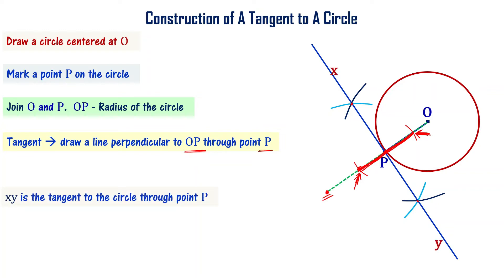The tangent is named XY. XY is the tangent to the circle through point P. By the theorem, the tangent is perpendicular to the radius OP — making a 90-degree angle at the point of contact P.